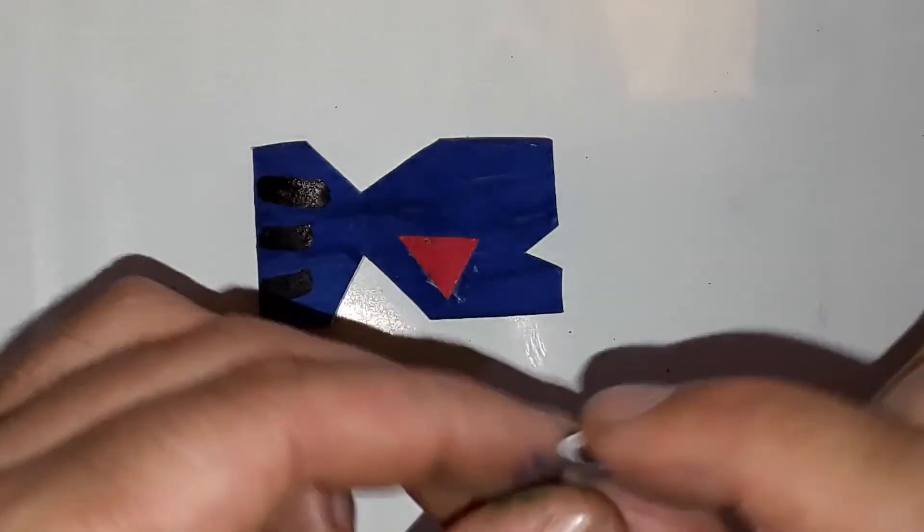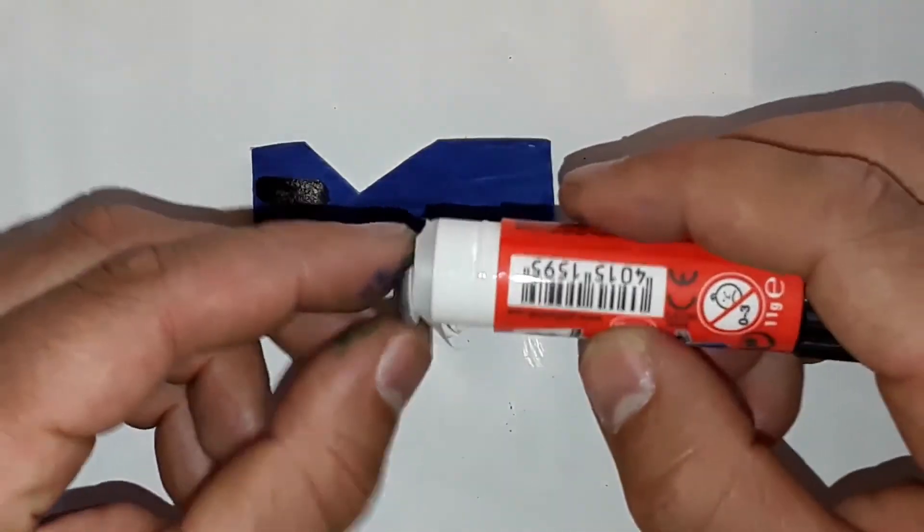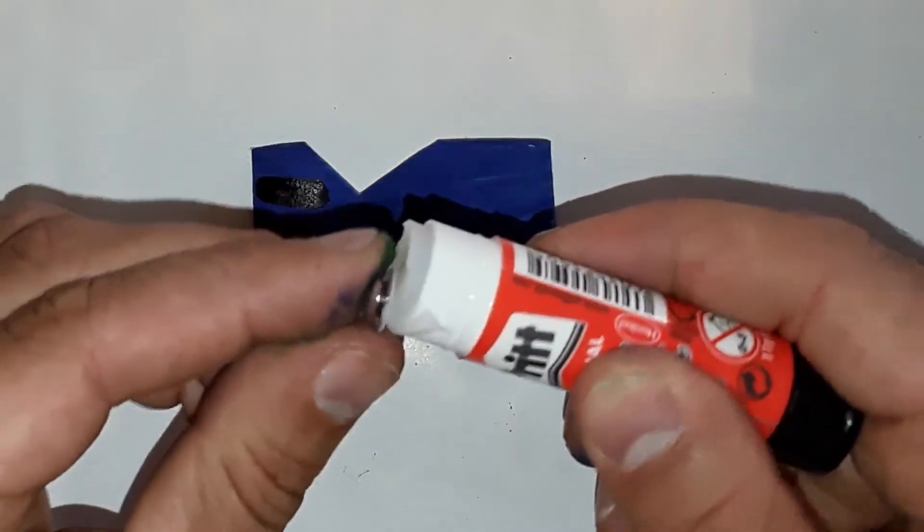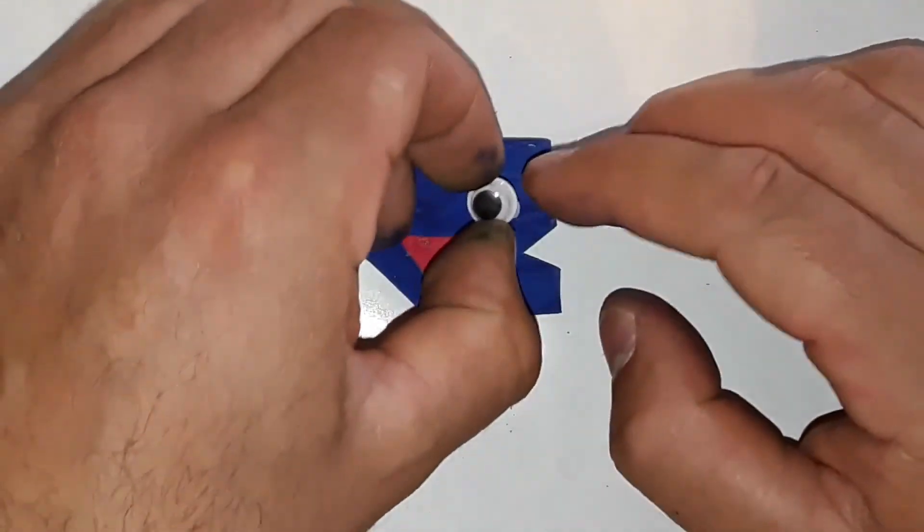Apply a little bit of glue to the googly eyes and stick one eye approximately at this spot.